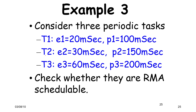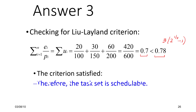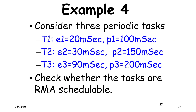Consider three periodic tasks: (20, 100), (30, 150), (60, 200). Checking the Liu and Layland criterion, the total utilization is 0.7, which is less than 0.78 — the value of the expression for three tasks. This criterion is satisfied, therefore the task set is schedulable.